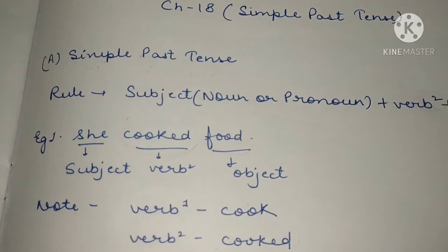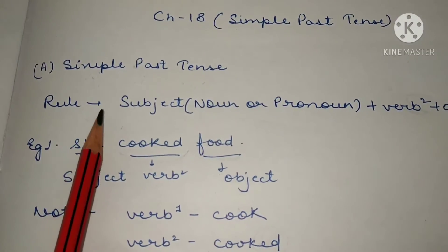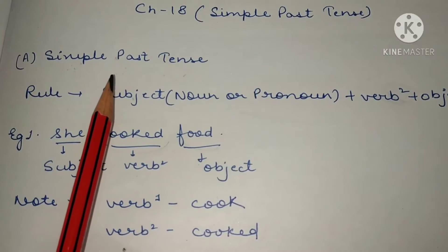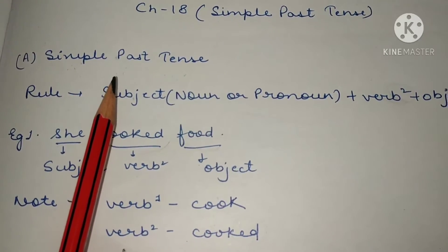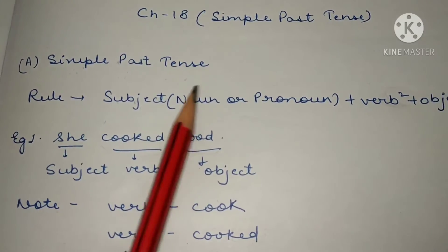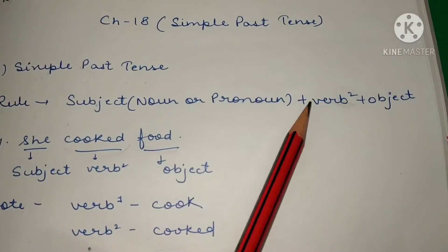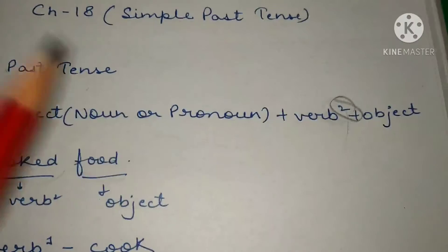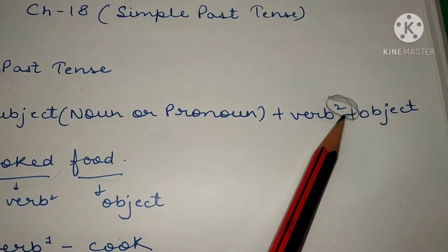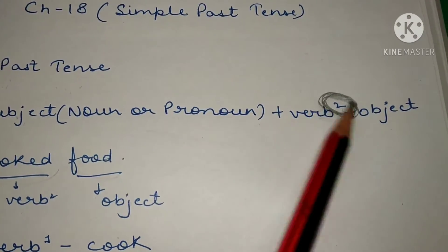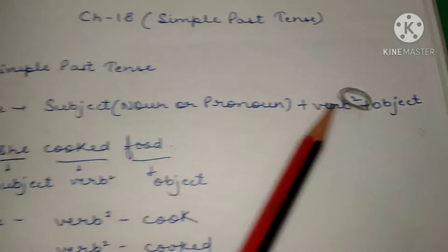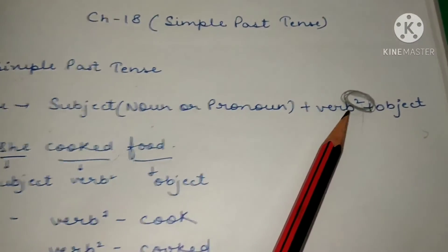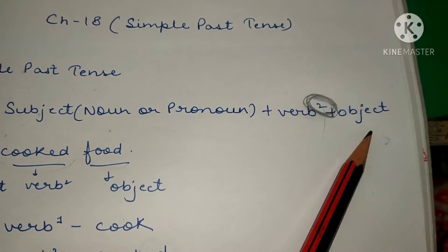Now, what is the rule in Simple Past Tense? The rule is: Subject — be it a noun or a pronoun — plus verb ki second form, plus object. Remember, in Simple Past Tense, verb ki second form lagti hai. So: Subject (noun or pronoun) + Verb 2nd form + Object.